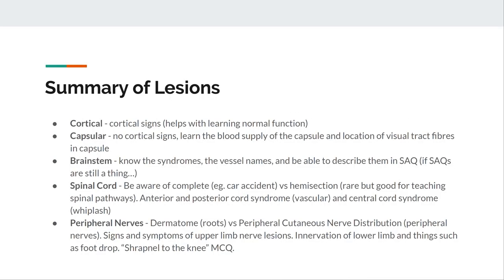Summary of the lesion section: cortical lesions have cortical signs — learn the anatomy, learn what each lobe does, and learn the blood supply. Capsular lesions have equal upper and lower limb signs but no cortical signs. Brainstem: learn the syndromes — pons has facial nerve signs, medulla doesn't, Weber's syndrome has oculomotor nerve palsy. Spinal cord: know Brown-Séquard, central cord, anterior and posterior syndromes. Peripheral nerves: know ulnar, median, and radial nerve palsy at different levels, foot drop, and everything else.